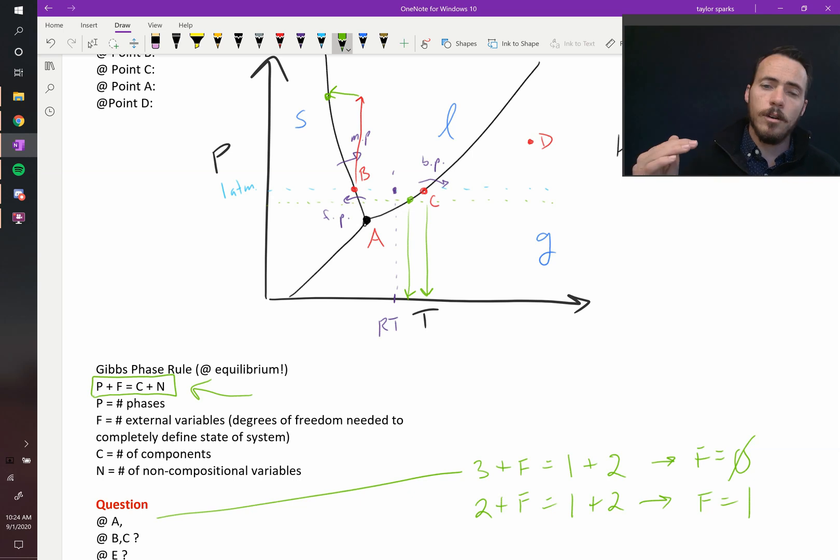If I go down in temperature or up in pressure, then the other one gets selected for me. I only have one degree of freedom if I still want to maintain that same equilibrium.